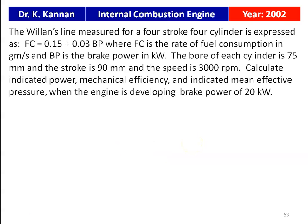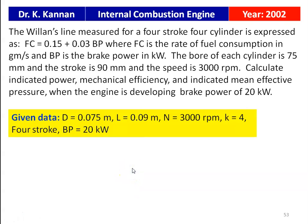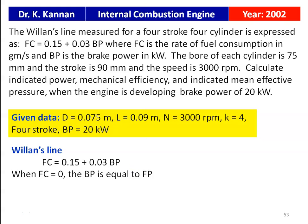The next question is from the 2002 question paper. The Willans line measured for a 4-stroke 4-cylinder engine is expressed as fc = 0.15 + 0.03 × BP, where fc is the rate of fuel consumption in grams per second and BP is the brake power in kilowatts. The bore of each cylinder is 75 mm, the stroke is 90 mm, and the speed of the engine is 3000 RPM. Calculate the indicated power, mechanical efficiency, and the indicated mean effective pressure when the engine is developing a brake power of 20 kilowatts.